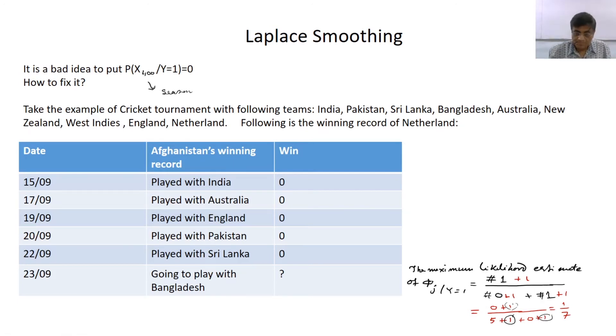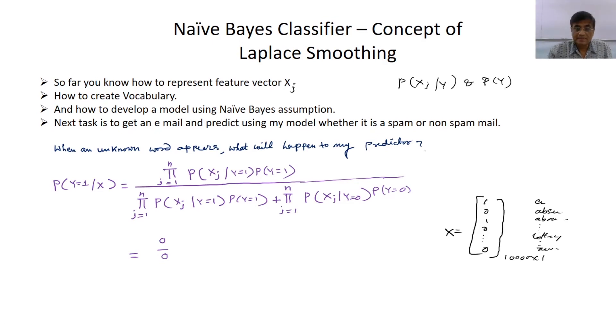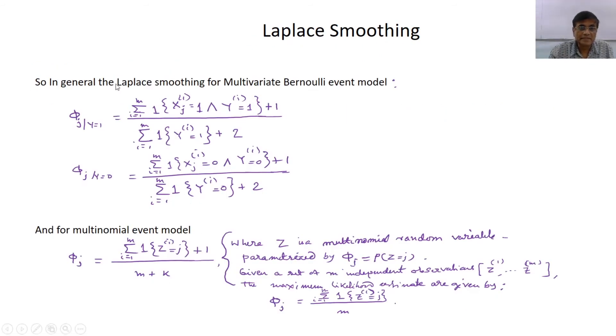This example will inspire us to do the same thing to avoid this kind of possibilities. In general, Laplace smoothing for multivariate Bernoulli event model, this parameter phi j when y equals to 1 is the indicator function that the number of times the feature appeared and it was a spam mail, plus 1, and then plus 2.